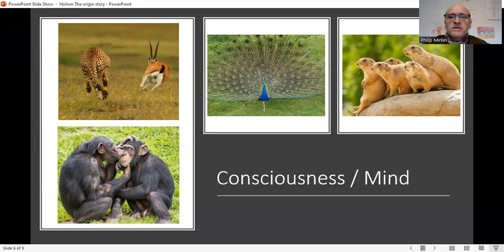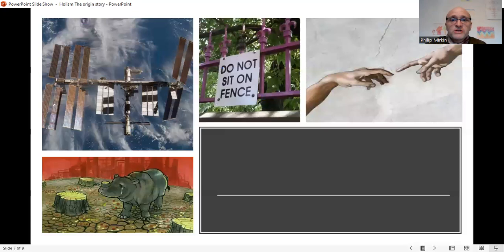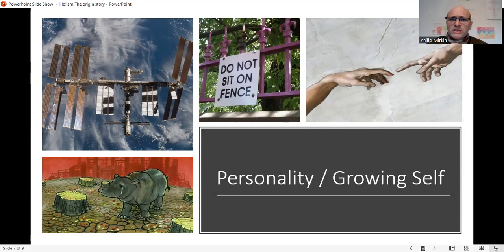So a particular primate, the homo species, also evolved and transformed and matured to such a point that a new substance could manifest. This is what Smuts called the personality, what I call the growing self.